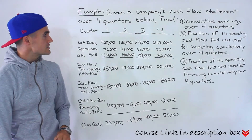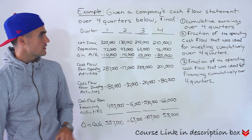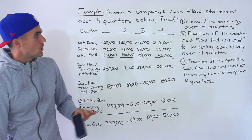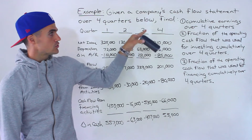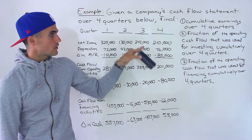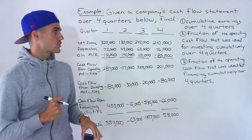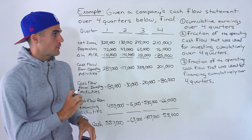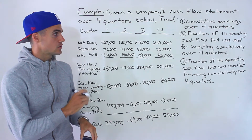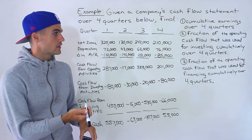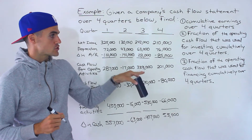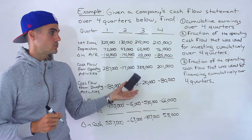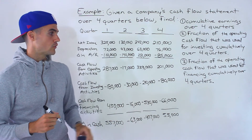Patrick here, and moving on to the next example. Given a company's cash flow statement over here, over four quarters, we have to find the cumulative earnings over the four quarters. Number two, the fraction of the operating cash flow that was used for investing cumulatively over the four quarters, and then the fraction of the operating cash flow that was used for financing cumulatively over the four quarters.